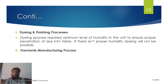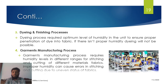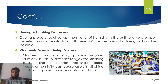The fourth and final process is garment manufacturing. Garment manufacturing units require optimum humidity for proper cutting and stitching of fabrics. If humidity is not proper, the garment's final shape will not be achieved, the customer will reject the garment, and production will be affected.